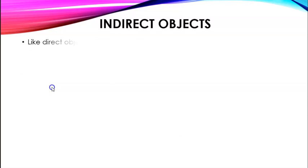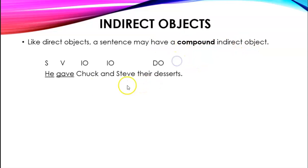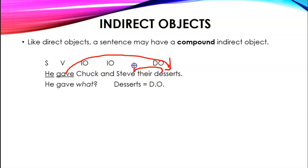So what that means is that like direct objects, a sentence can have a compound indirect object. He gave Chuck and Steve their desserts. In this sentence, he gave what? Desserts. So desserts is our direct object. And then you ask to whom did he give it? He gave it to Chuck and to Steve. So we're going to have two indirect objects there.